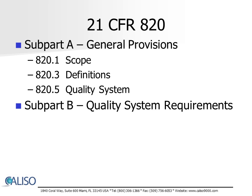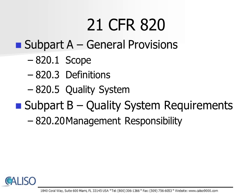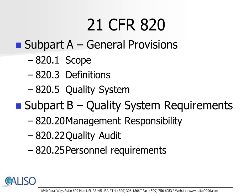Subpart B, Quality System Requirements, which includes management responsibility and quality, such as the requirement for a documented quality management system and management review, quality audits or the requirements for internal audits, and personnel requirements, which includes having competent employees and documenting their training needs.